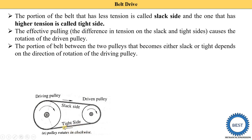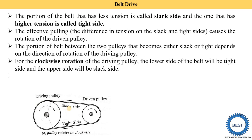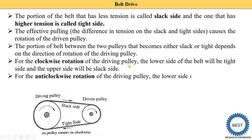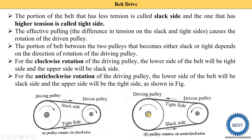When the driving pulley rotates in the clockwise direction, the belt is pulled from the bottom side, so the bottom is the tight side and the top is the slack side. In the anticlockwise direction, the lower side becomes the slack side and the upper side becomes the tight side.